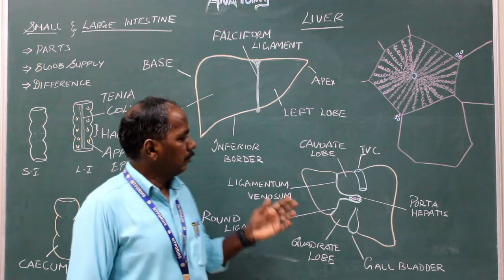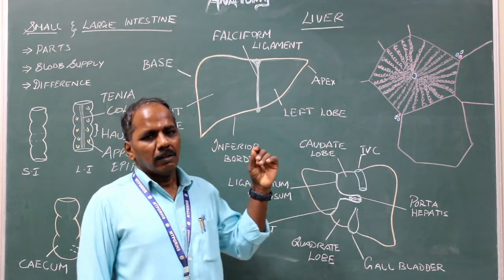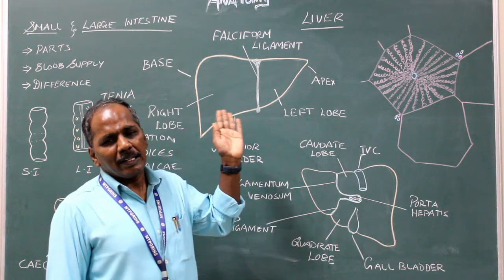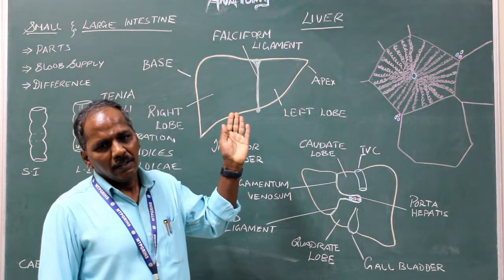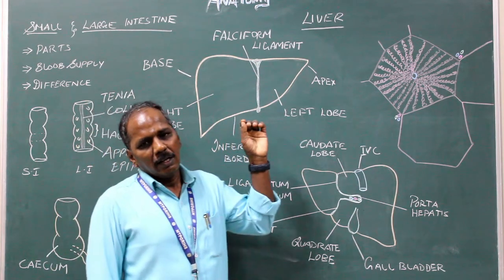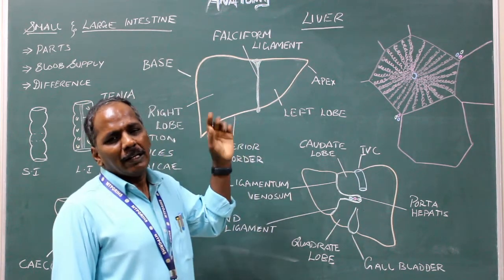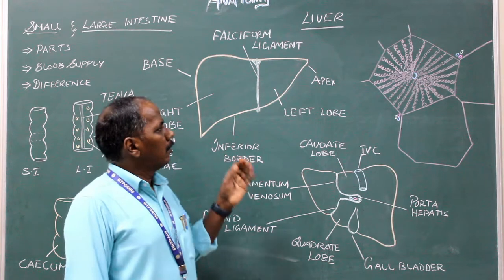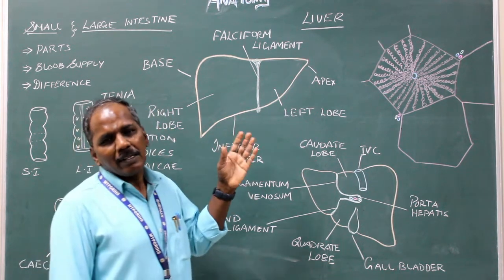Liver. It is the largest gland in the body, which is reddish-brown in colour. Shape: it is a bed-shaped organ.